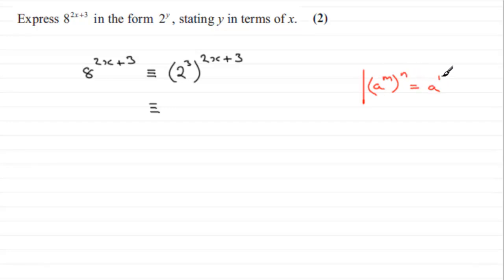All right, so using that rule we can see that this is the same as 2 to the power 3 multiplied by 2x plus 3, and we can see that this is now in the form 2 to the power y.